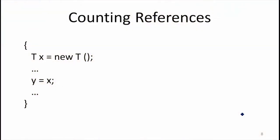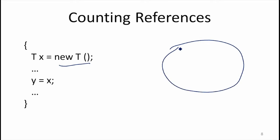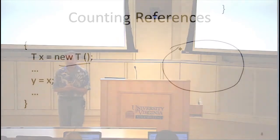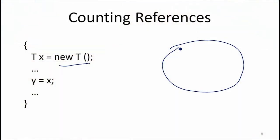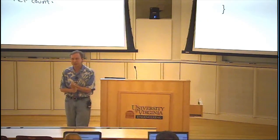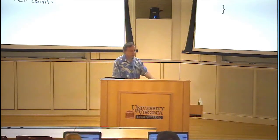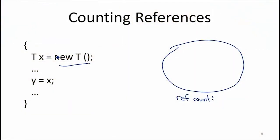How does reference counting work? Here's some Java pseudocode. NewT creates a new object, and we associate with each object a reference count. When we're inside the constructor, the constructor can reach the object, so the reference count should be one. What happens when we return from the constructor? We go out of scope, and it might seem like it goes to zero — but before the constructor loses that reference, what else happens? We swap the reference, so the reference count should never actually hit zero.